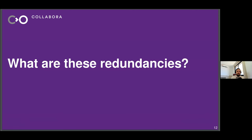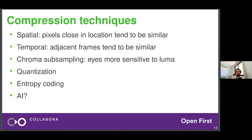Video codecs operate on the basis that you can compress video by exploiting redundancies. The first is spatial redundancy: pixels close to one another tend to be similar in value. If you take a photo of someone, pixels on their skin are roughly the same color, pixels on their shirt are roughly the same color. So we don't need to encode that much information — we can just copy from adjacent pixels.